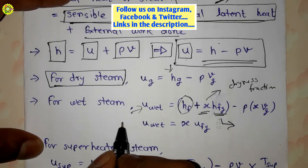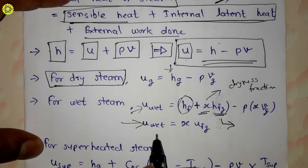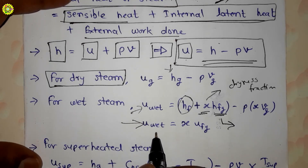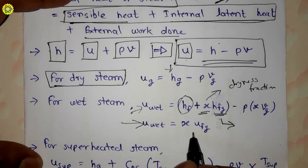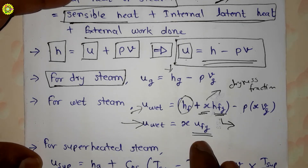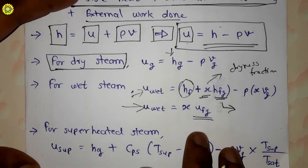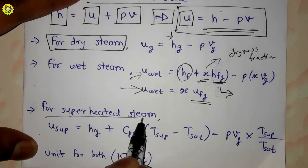This expression can be simplified to: u_wet = u_f + x·u_fg, where u_fg is the internal energy of vaporization.